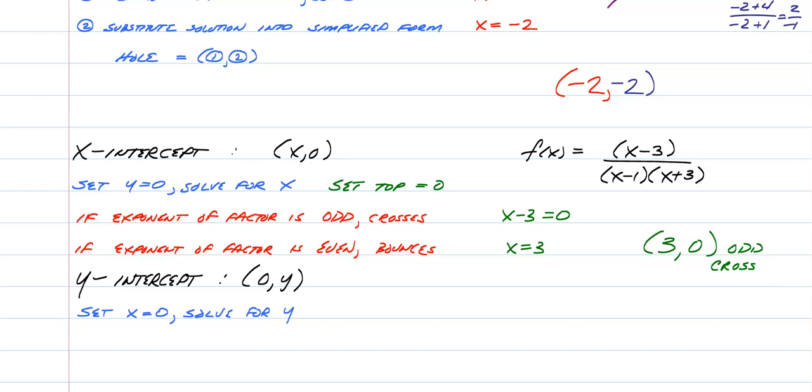If that was a multiplicity of 2, it would bounce off of it just like we did in other polynomial functions. Y-intercept is always simple. You just substitute x as 0 into the function, so that's going to give you 0 minus 3 over 0 minus 1 times 0 plus 3, and that's negative 3 over negative 3, so your y-intercept is 0 comma 1.